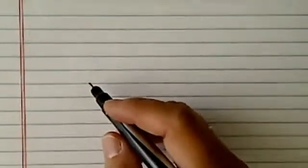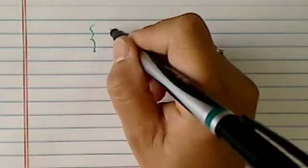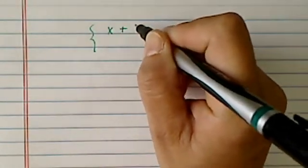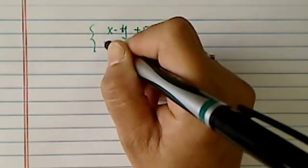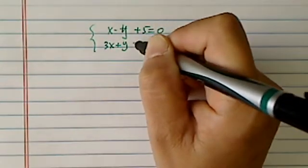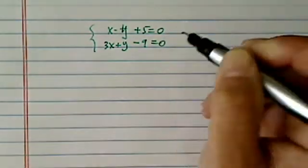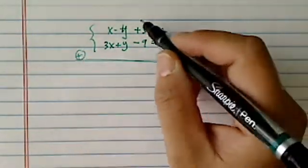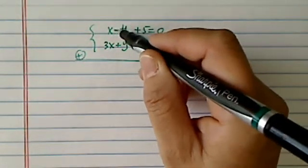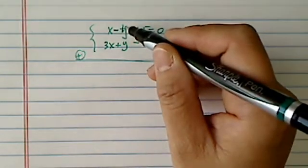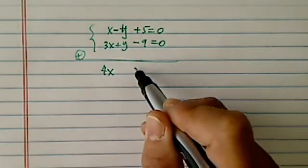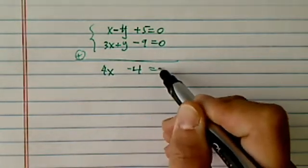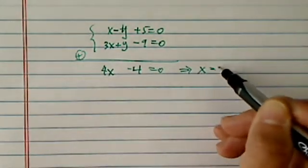We need to first of all find where the points are for the intersection. We have x minus y plus 5 equal to 0, and we have 3x plus y minus 9 equal to 0. So now if we add those two equations, the reason I'm adding is I spotted y has equal and opposite coefficients. So I have 4x minus 4 equal to 0, so obviously x equal to 1.